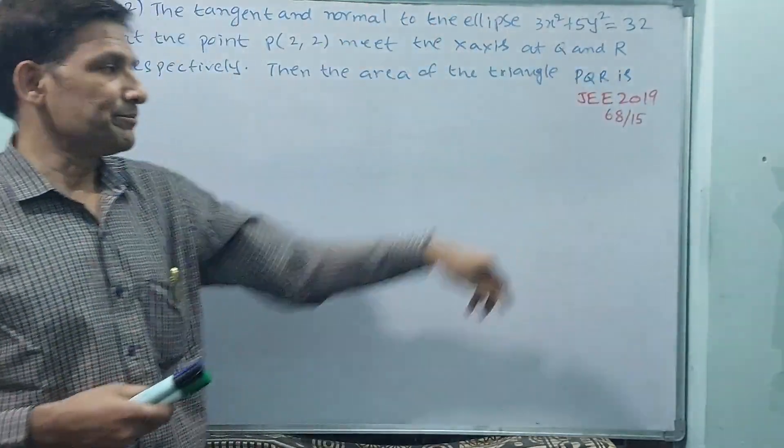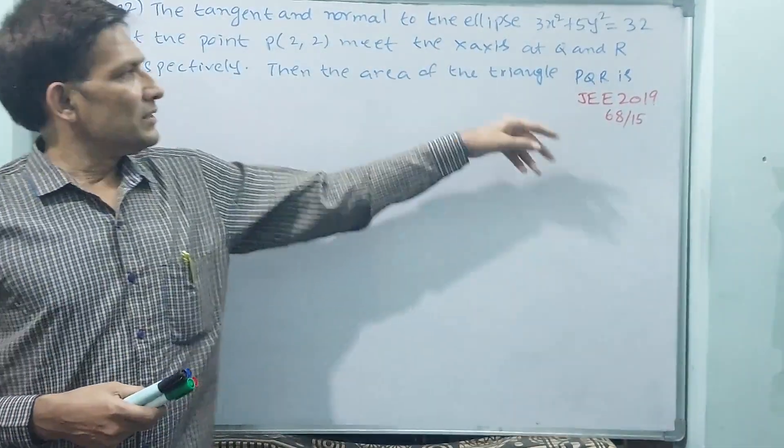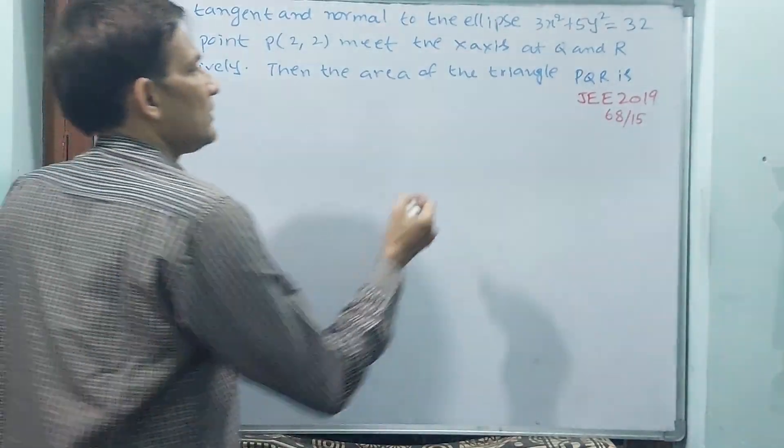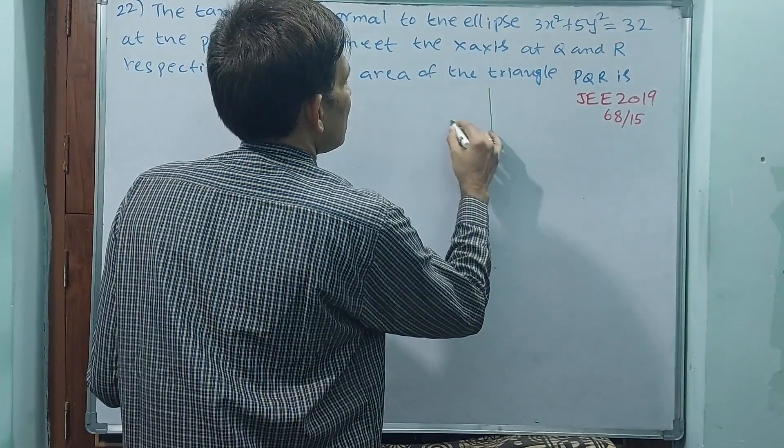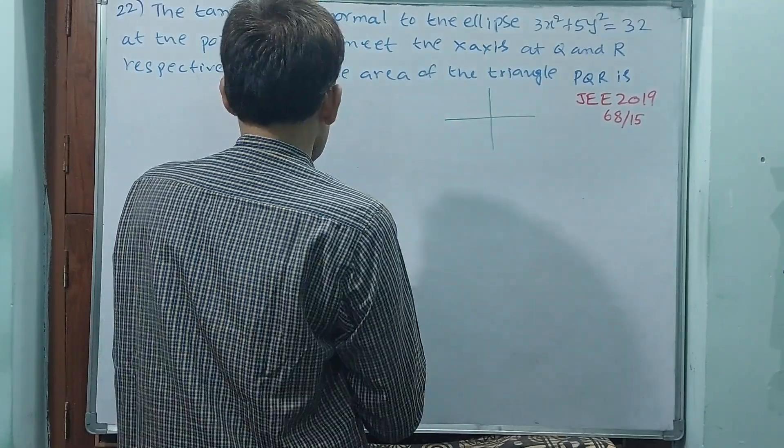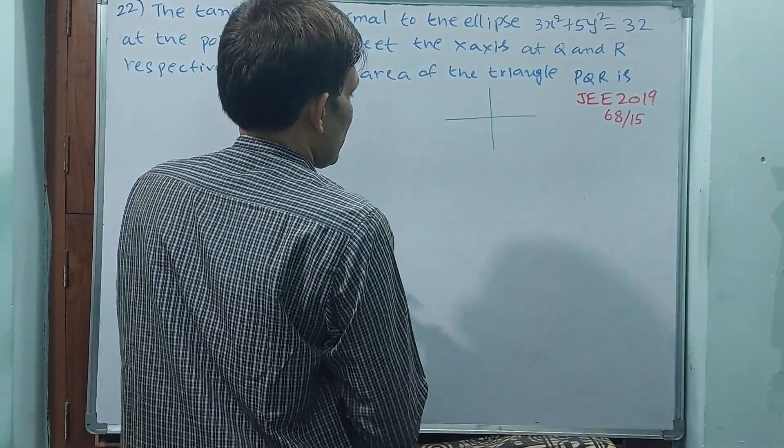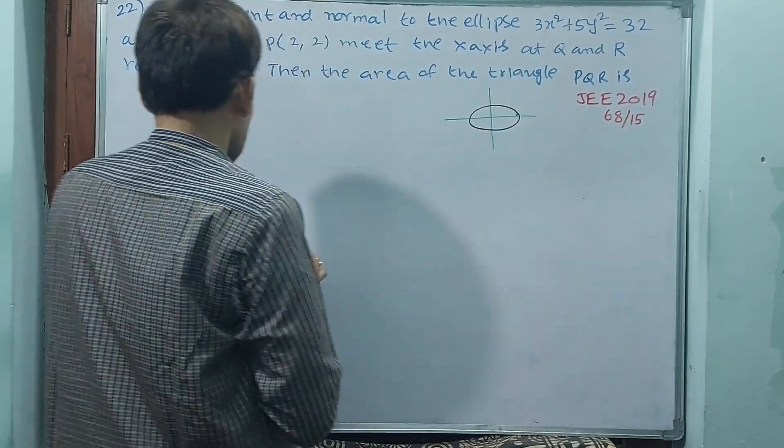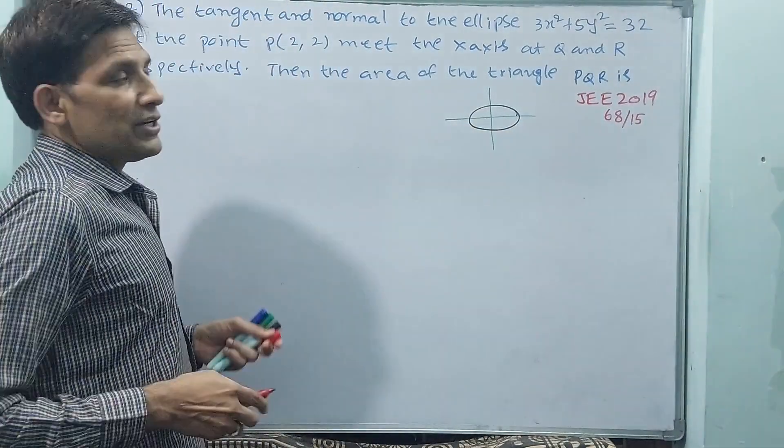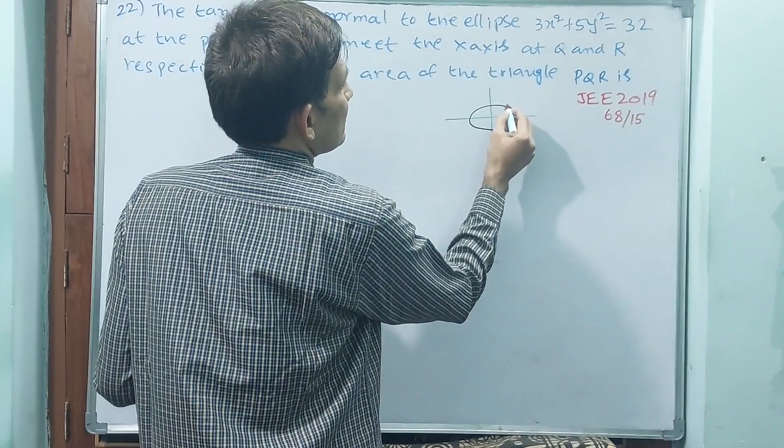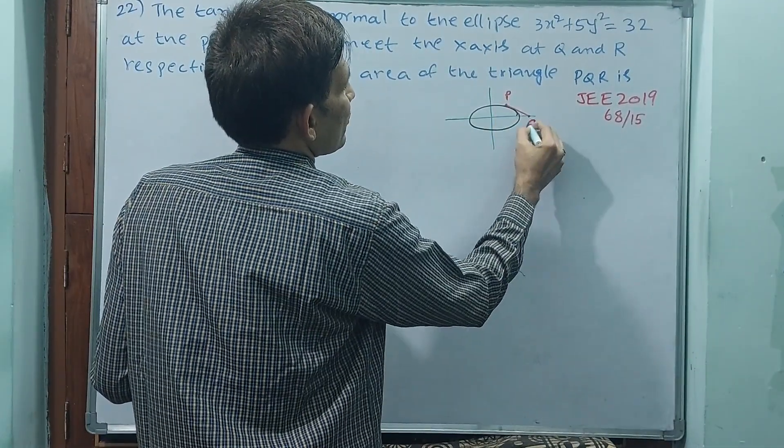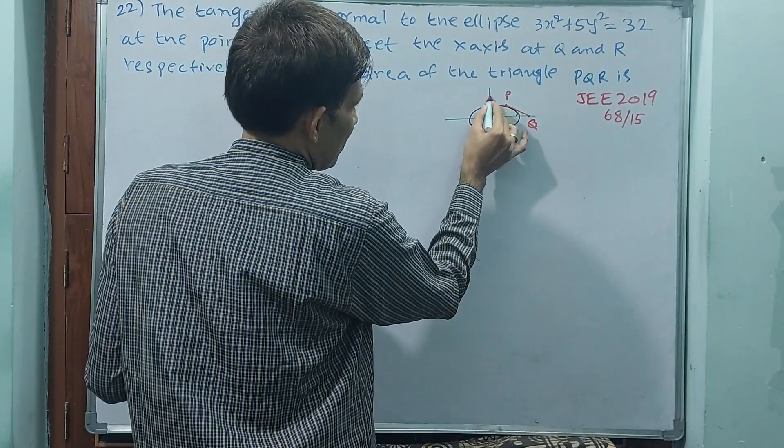Then the area of the triangle PQR is opposite. See here I want to draw the figure, you have to understand this figure. See this is your ellipse. Tangent is meeting at Q, this is point P, this is Q.